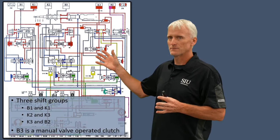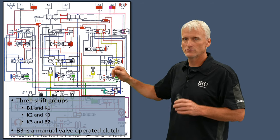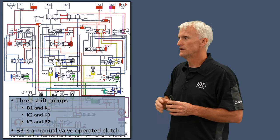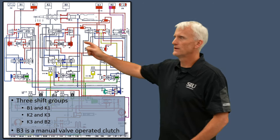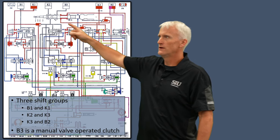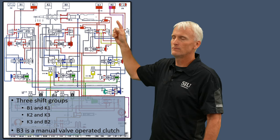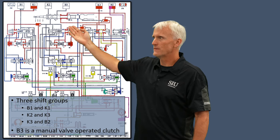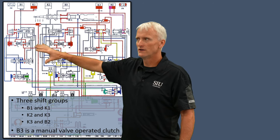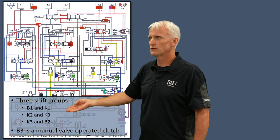Here's the hydraulic schematic for this transmission — it's a little zoomed out but we'll look closer to understand how it works. On the top of the schematic you can see the clutches laid out: B1, K1, K2, B3, K3, and B2. There's a manual valve in the middle, and the valves on the sides are responsible for the shift groups, which I've listed out below.